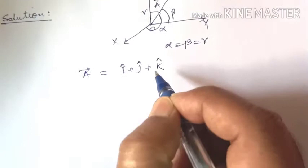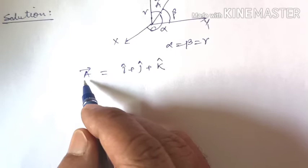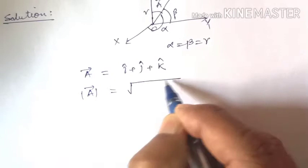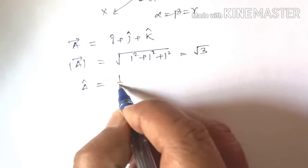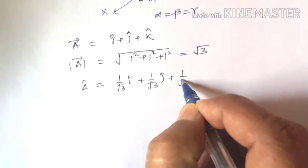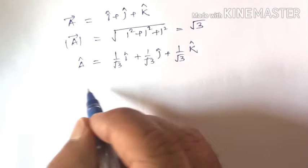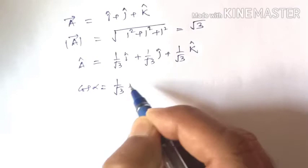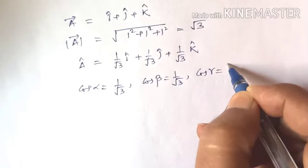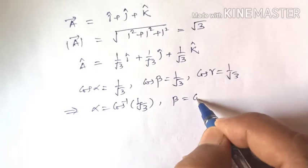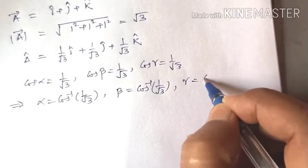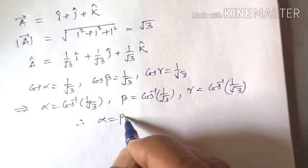The magnitude is square root of 1 squared plus 1 squared plus 1 squared, which equals root 3. So the unit vector a-hat equals (1/√3)i plus (1/√3)j plus (1/√3)k. The coefficients of i, j, k are the direction cosines, so cos alpha equals 1/√3, cos beta equals 1/√3, and cos gamma equals 1/√3.